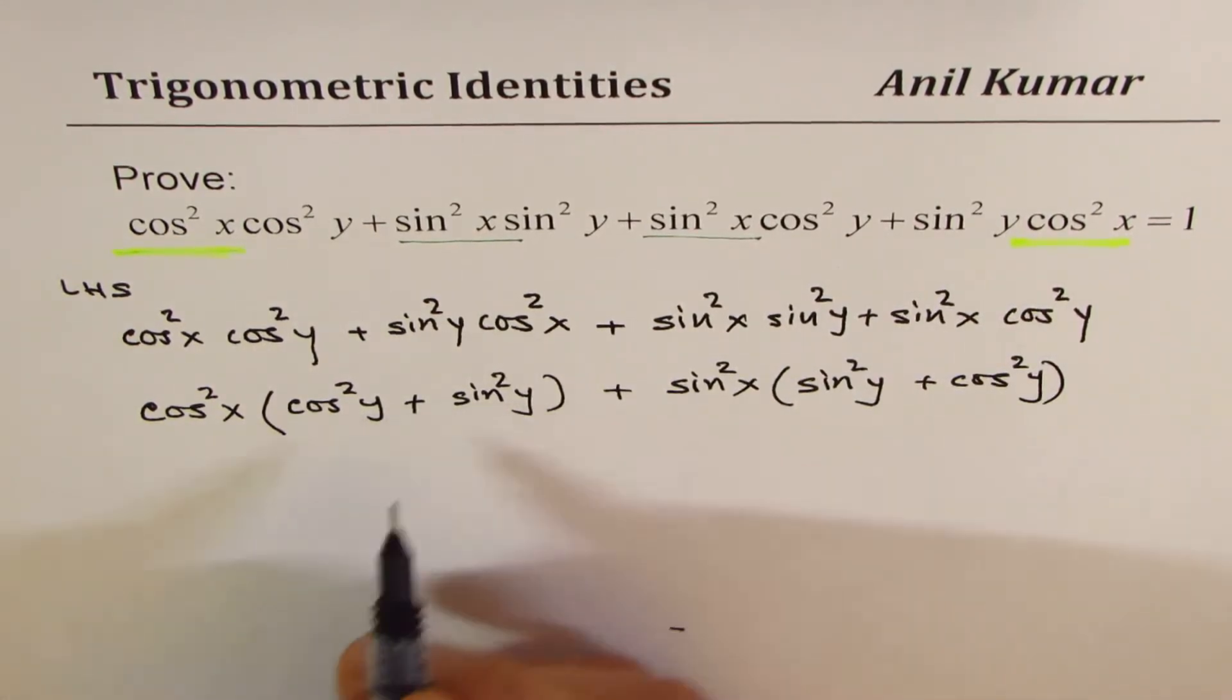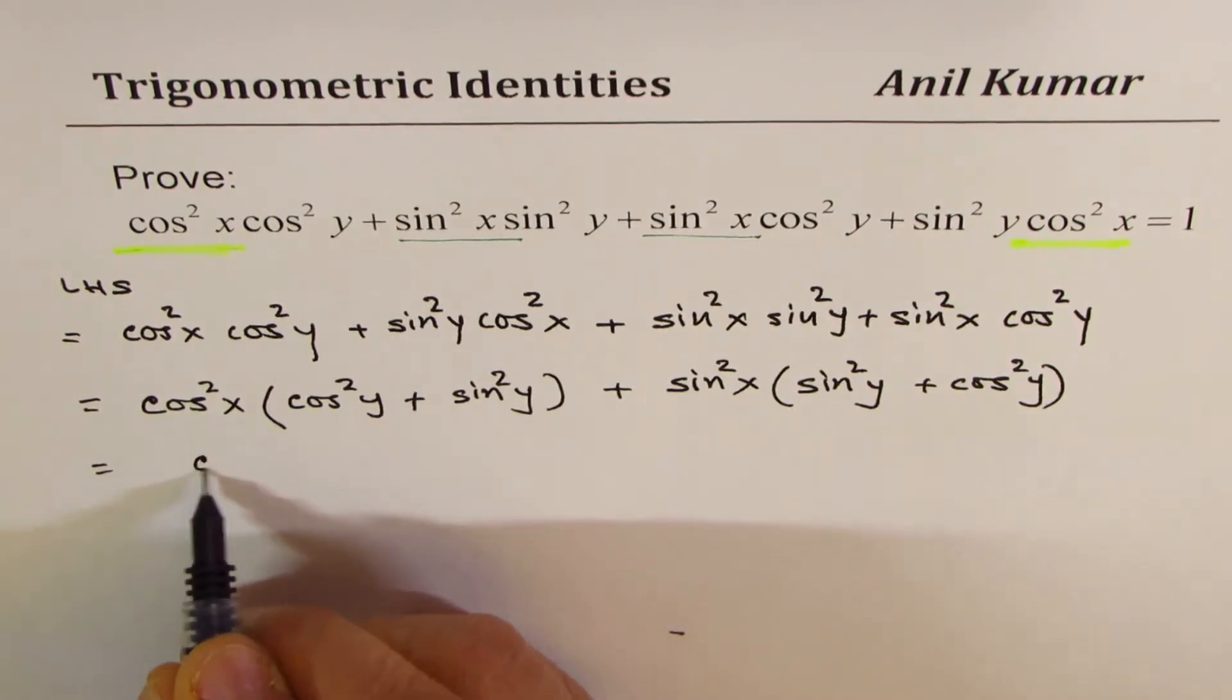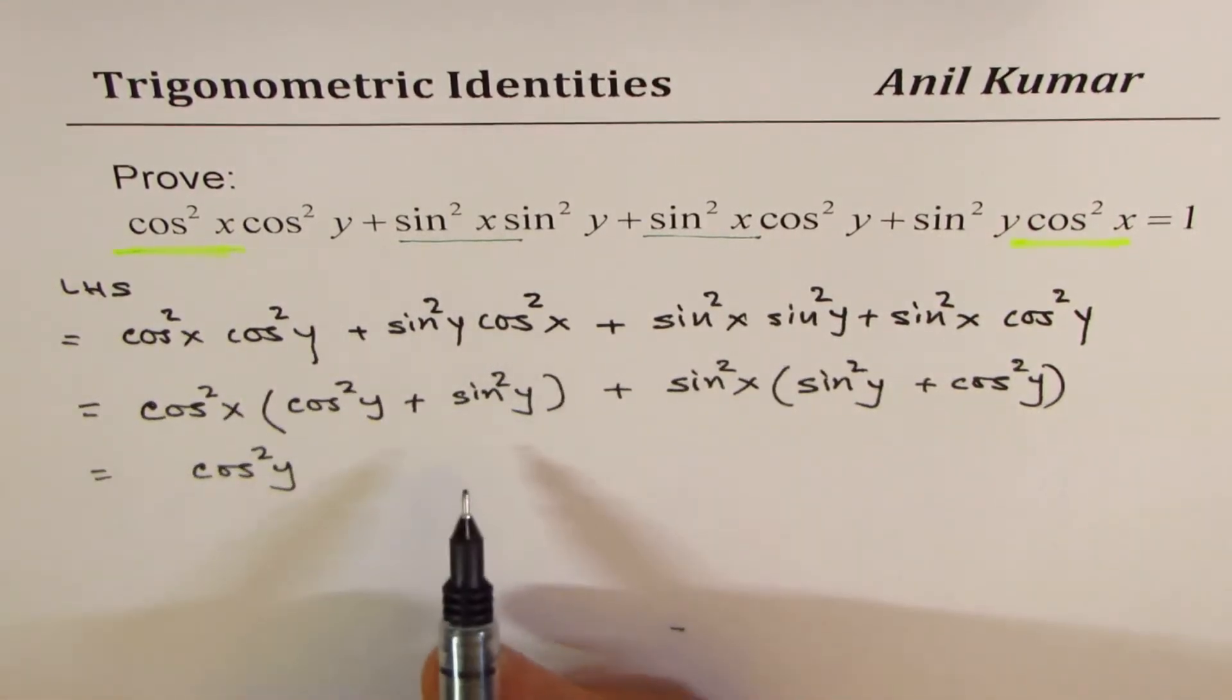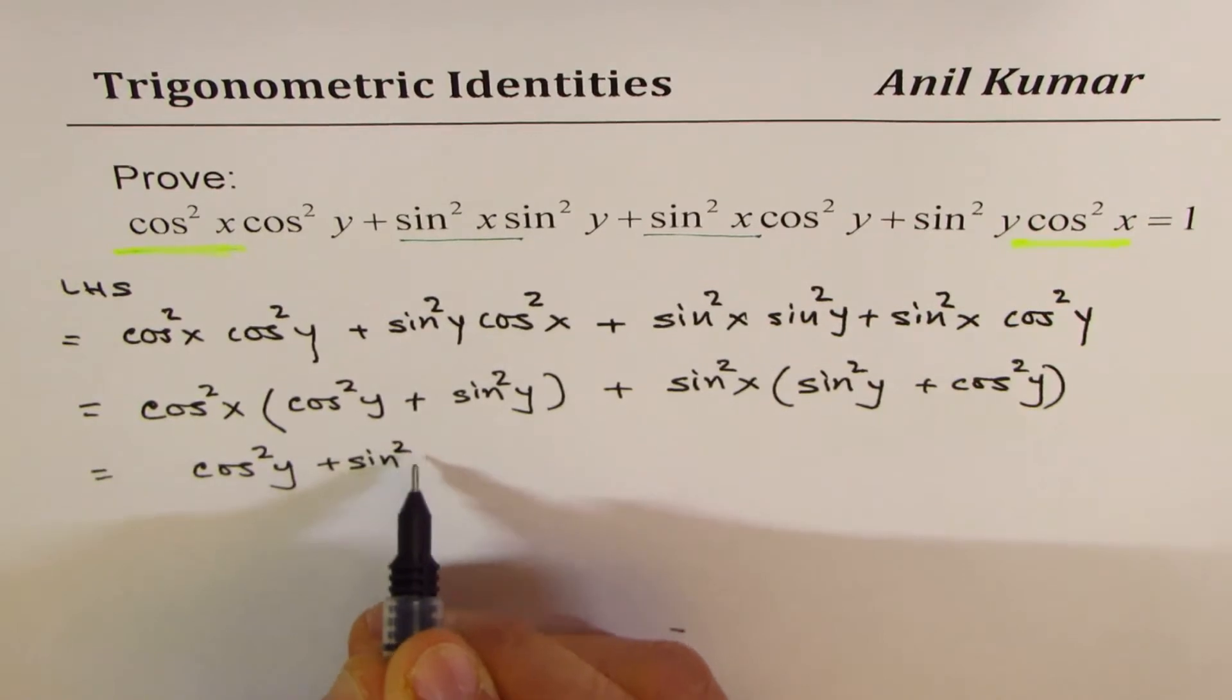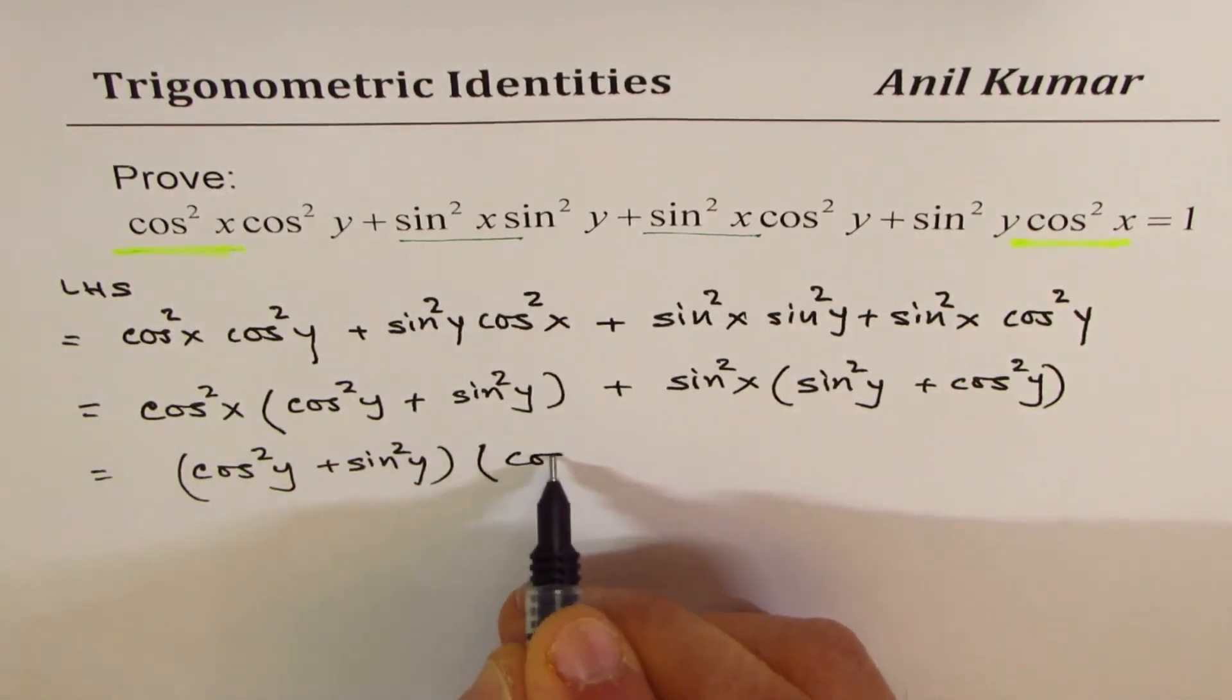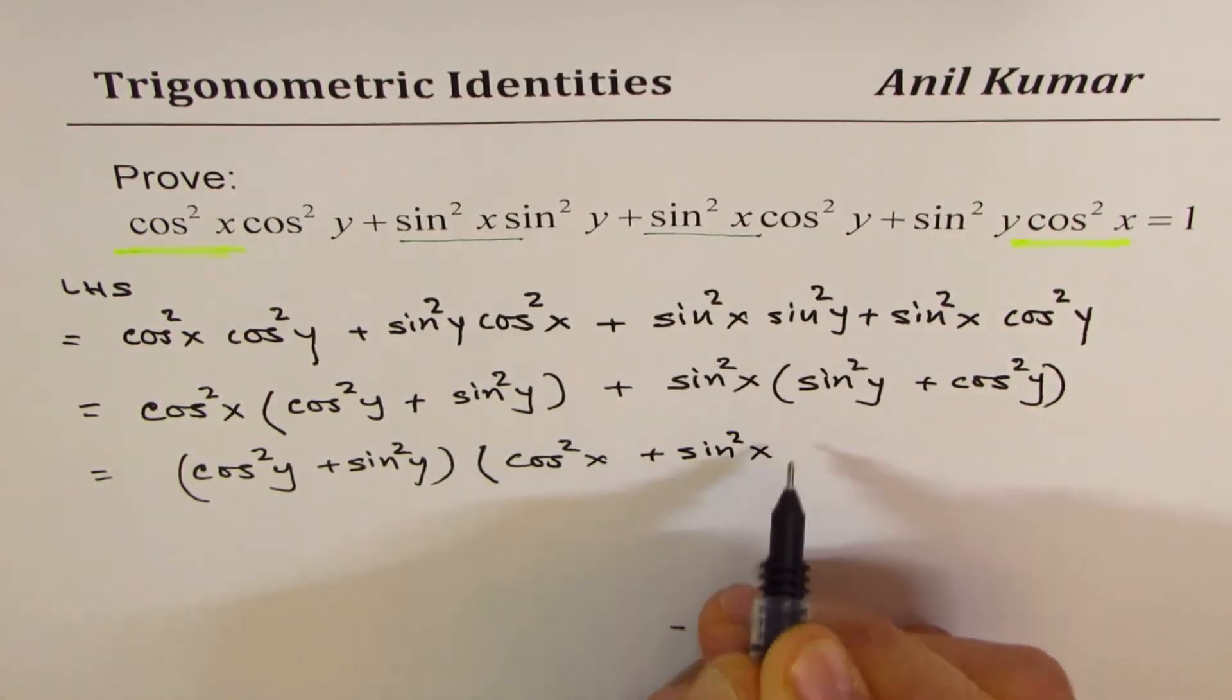And we're left with sin²y plus cos²y. Now, cos²y plus sin²y is common. So let's take this common: cos²y plus sin²y times cos²x plus sin²x. This is what we get.